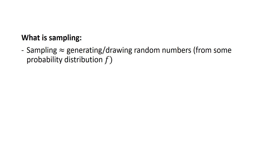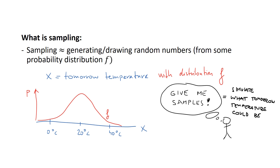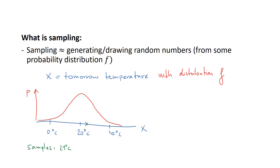Let's say we have a random variable 'tomorrow's temperature' denoted as X, which can take certain outcomes with some probability. Now someone asks you: 'Give me the samples' — which basically means simulate one or more values of what tomorrow's temperature could be. So we simulate values on the x-axis according to the probability distribution F. We simulate the first sample and let's say it's 21 degrees Celsius, then 19 degrees, 11 degrees, and so on.